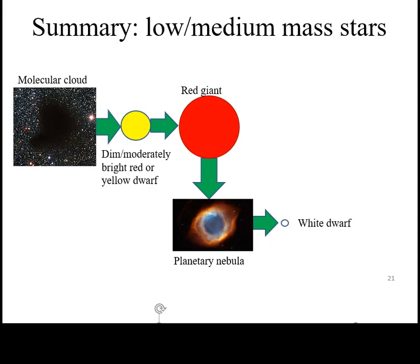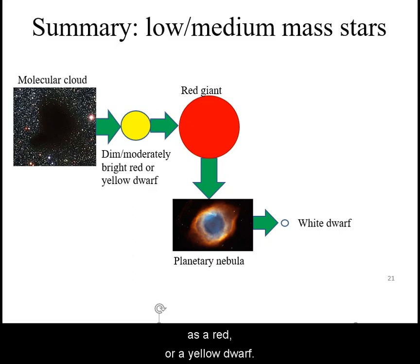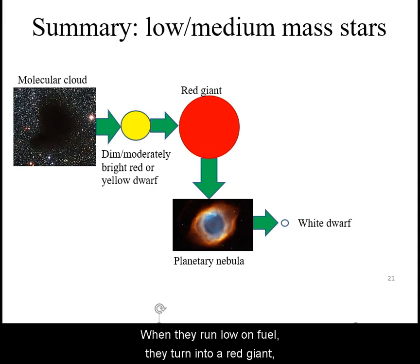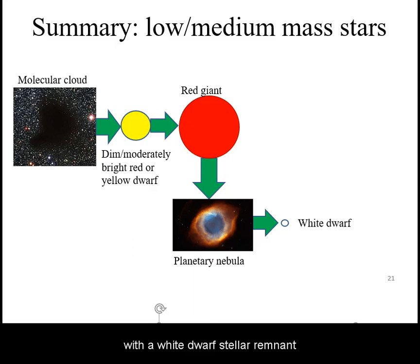In summary, low-mass stars form from a molecular cloud, burn through their fuel slowly as a red or yellow dwarf. When they run low on fuel, they turn into a red giant, which then ends up as a planetary nebula, with a white dwarf stellar remnant at its core.